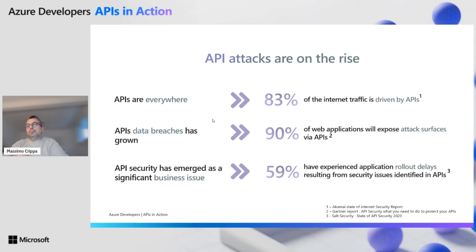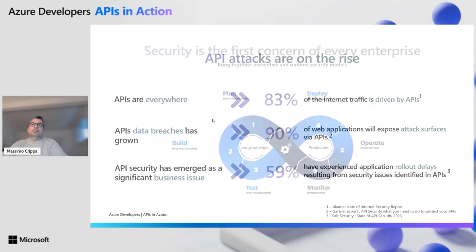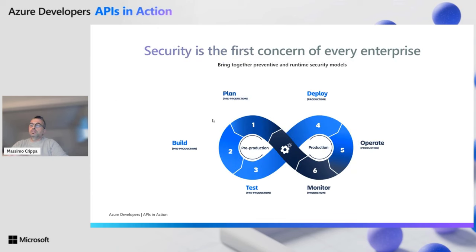When we look at all of this data passing and moving through APIs, we can understand that we have more and more data breaches and more attacks in all of these years. As a security report says, APIs became a significant business issue, in the sense that 59% of enterprises experience delay in a rollout because of some security issues. Security became the first concern of every enterprise.